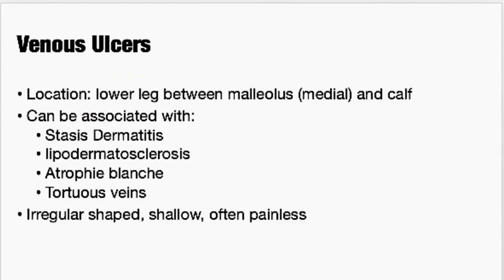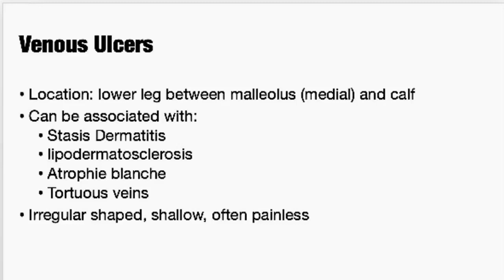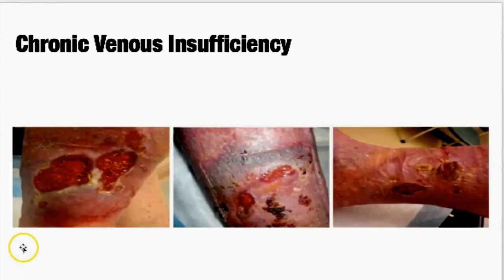Venous ulcers, in stark comparison, tend to be between the knee and the ankle on that lower leg — not generally on the feet and toes like arterial ulcers. These are generally associated with stasis dermatitis and tortuous veins. They're often irregular, shallow, and can be painless lesions, though they can have pain. You can see how these are irregular-shaped, and there's a lot of swelling. The color gets to be a little more red because of those lysed red blood cells.